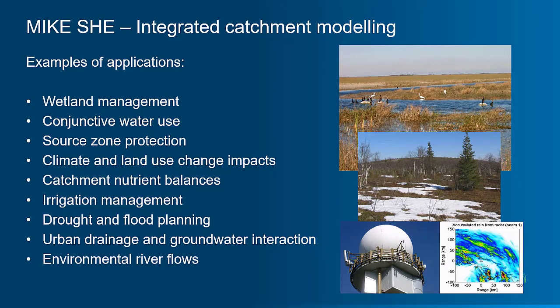MIKE SHE has been used for a wide range of different applications, of which some are listed here: wetland management, conjunctive water use, source zone protection, climate and land use change impacts, catchment nutrient balances, irrigation management, drought and flood planning, urban drainage and groundwater interaction, and environmental river flows. These are just some of the applications MIKE SHE has been used for, and illustrate the versatility of the modeling system.